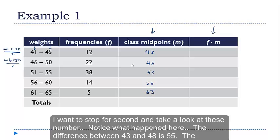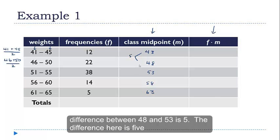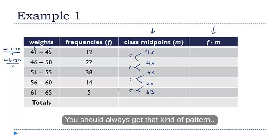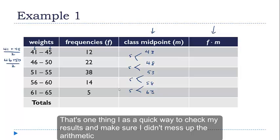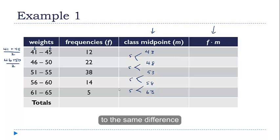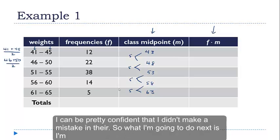Now I want to stop for a second and have you take a look at these numbers. Notice what happened here, right? The difference between 43 and 48 is 5. The difference between 48 and 53 is 5. The difference here is 5. And the difference here is 5. You should always get that kind of pattern. That's one thing I do. It's a quick way to check my results to make sure I didn't mess up the arithmetic on any of those individual classes. If I come out to the same number, to the same difference, I can be pretty confident that I didn't make a mistake in there.